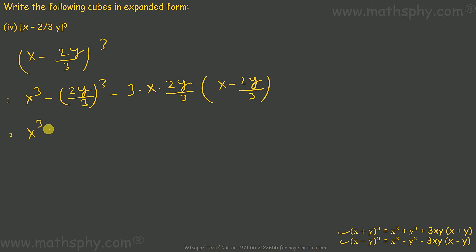This comes to x cube minus 8y cube over 27, minus 2x into x minus 2y over 3, which gives x cube minus 8y cube over 27 minus 2x square plus 4xy square over 3.